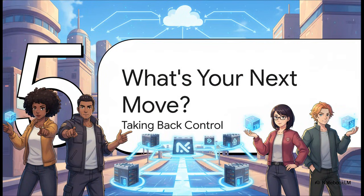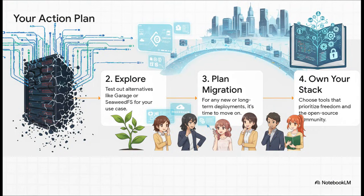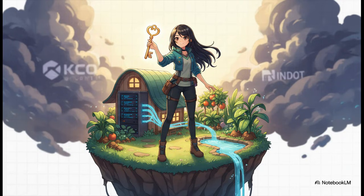So after all that, what should you do now? You don't need to panic and rip everything out tomorrow, but you absolutely need a long-term plan. For any new projects, it's really time to look elsewhere. Take a hard look at your current risk, start playing around with the alternatives we just talked about, and pick a path forward that aligns with the values of transparency and community control. At the end of the day, this whole episode is a huge reminder of why we self-host in the first place — it's not just about running cool software. It's about owning your data, controlling your infrastructure, and having the freedom to choose tools that actually respect you as a user and as a contributor.